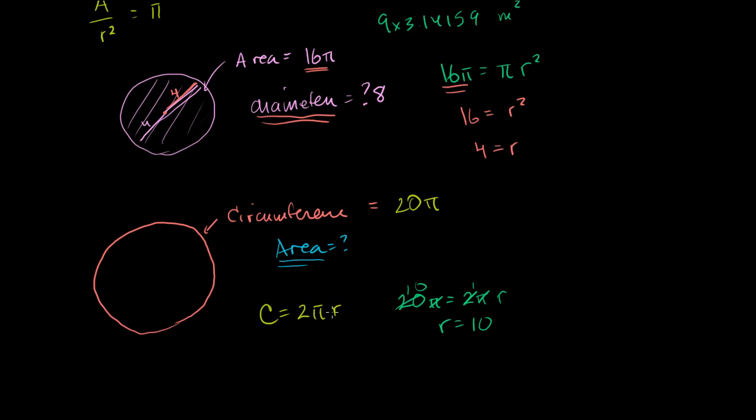So we've figured out our radius. Now, we know that the area is equal to pi r squared. And lucky for us, using the circumference, we were able to figure out the radius. Now, using the radius, we can figure out the area. So the area is going to be equal to pi times r squared. r is 10 times 10 squared, which is equal to pi times 100. Or it's equal to 100 pi. Just like that.